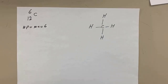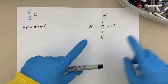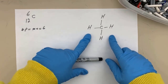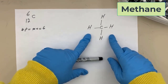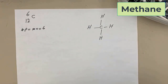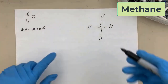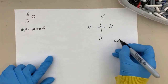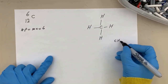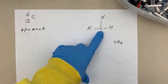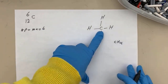This is the structural formula of methane — it shows the arrangement of the covalent bonds between atoms. And this is the molecular formula of methane. As you can see, it has only one carbon.